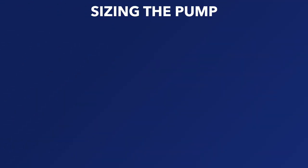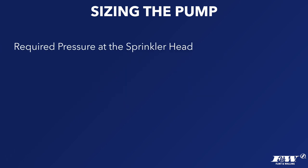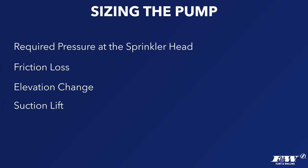Now we have everything needed to size the pump. To get the required pressure, add: required pressure at sprinkler head + friction loss + elevation change + suction lift. In our example: 50 + 7.8 + 3.5 + 1.7 = 63 PSI total required pressure. We also know the required flow rate is 12 GPM.